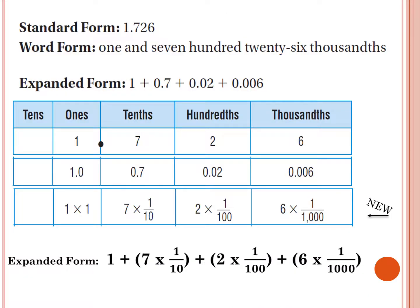If my number is one and seven hundred twenty-six thousandths, I have one whole, seven tenths, two hundredths, and six thousandths. In expanded form we have one times one — one group of one — plus seven times one-tenth, seven groups of one-tenth, plus two times one-hundredth, two groups of one-hundredth, plus six times one-thousandth, six groups of one-thousandth. Put it all together in expanded notation.